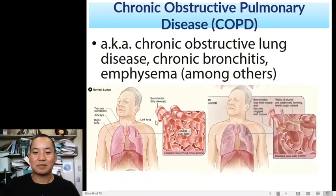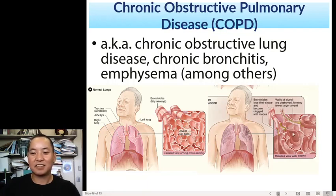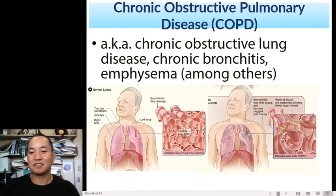Here we have normal lungs and the alveoli — those little sacs. In COPD, the alveoli are being destroyed, so you no longer get that nice little network. These alveoli start to become bigger and the sacs become looser, losing their shape. The lung itself kind of starts to lose its shape as well.